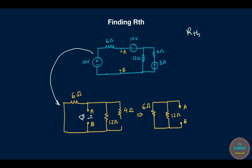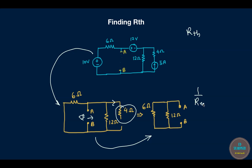Looking through the ab terminals to find the equivalent resistance, with the 4 Ω resistor ignored since no current flows through it, we can see that the 6 Ω and 12 Ω resistors are connected in parallel across ab. Applying the parallel resistance formula: R_eq = 1 / (1/6 + 1/12) = 1 / (2/12 + 1/12) = 1 / (3/12) = 4 Ω. So Rth = 4 Ω.